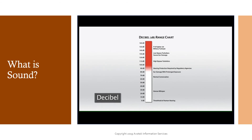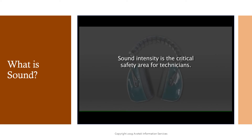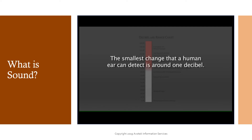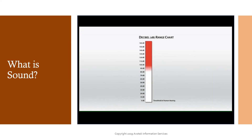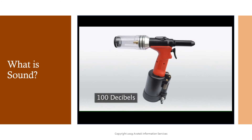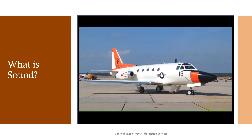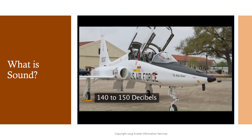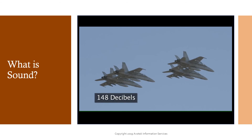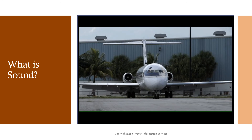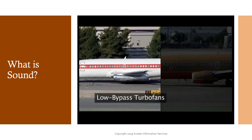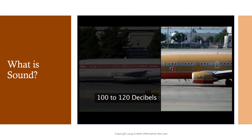Decibel is the measure of sound intensity, which is the critical safety area for technicians. The smallest change a human ear can detect is around 1 decibel. A human whisper falls in the 20 to 30 decibel range, and normal conversation falls in the 60 to 70 decibel range. A rivet gun produces sound around 100 decibels. The aviation ramp is even noisier — military turbojets produce sound in the 140 to 150 decibel range, and F-18 fighter jet engines have been measured at 148 decibels. Commercial aircraft are quieter: low bypass turbofans normally measure in the 120 to 140 decibel range, and modern high bypass turbofans are in the 100 to 120 decibel range.